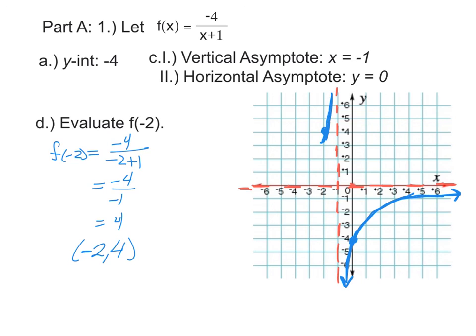This branch of the hyperbola has to go through this point and then get close to not just this asymptote, but also out here to this horizontal asymptote. Now we have a very good sketch of the graph of f(x).